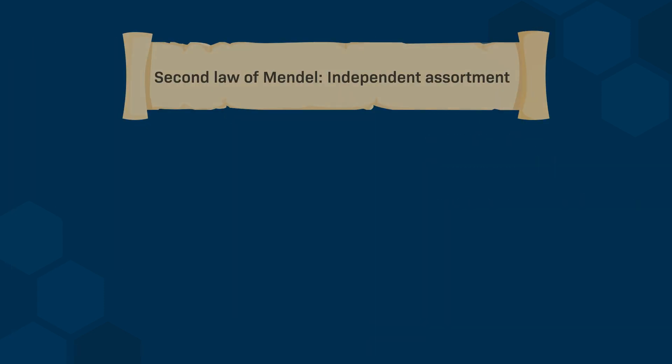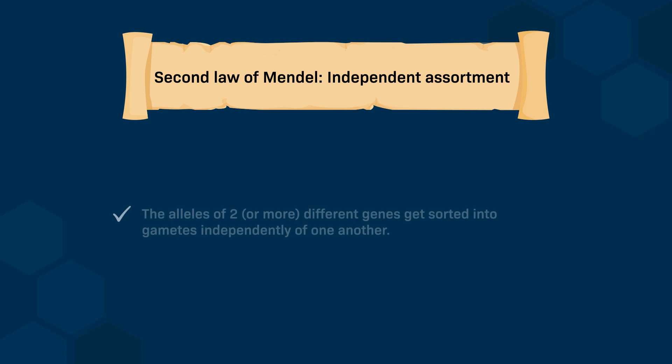This led to Mendel's second law — the Law of Independent Assortment — which states that the alleles of two or more different unlinked genes get sorted into gametes independently of one another.